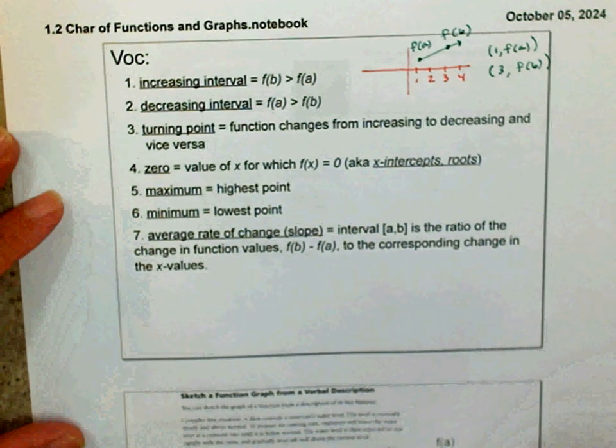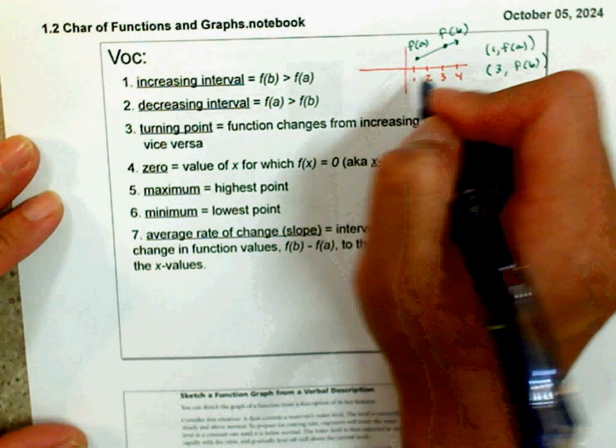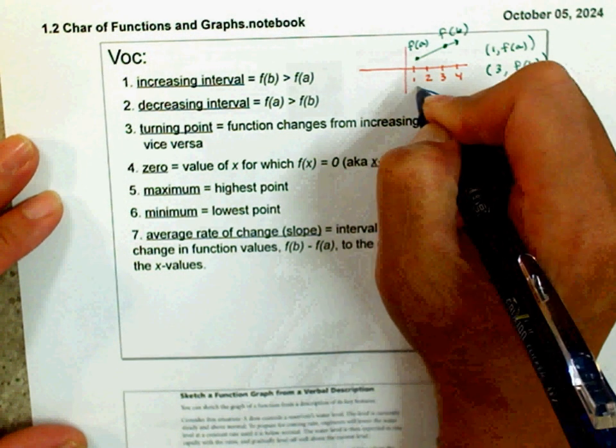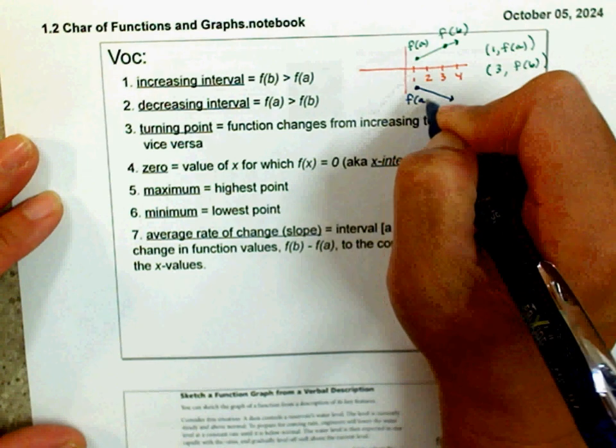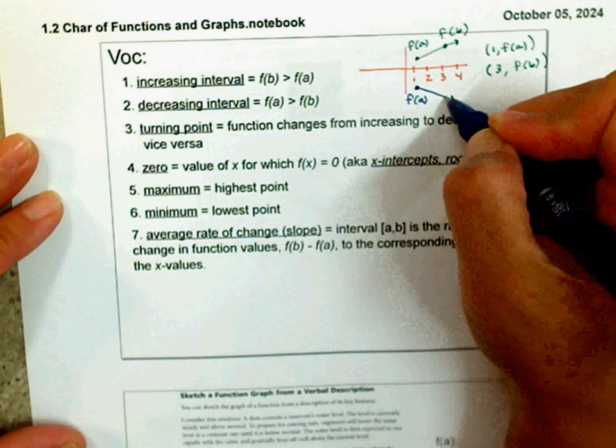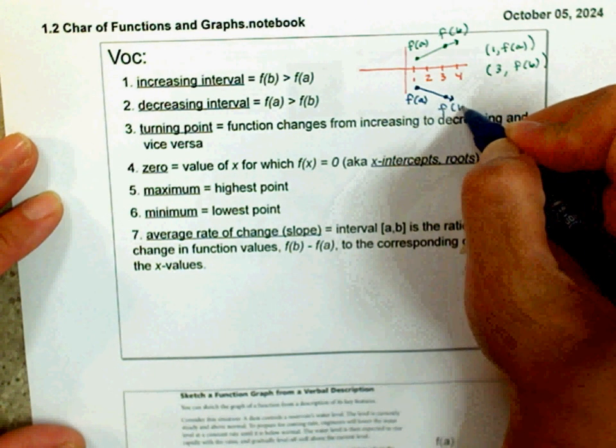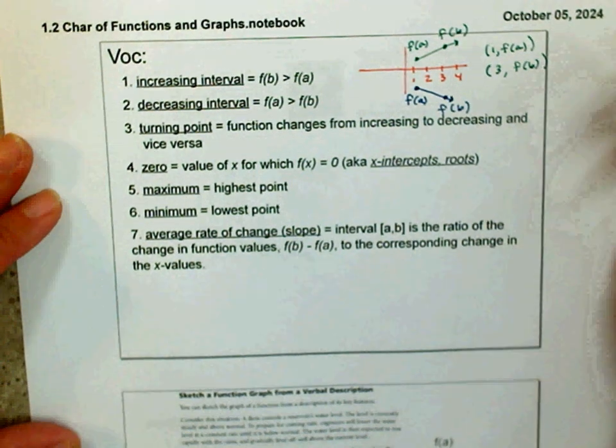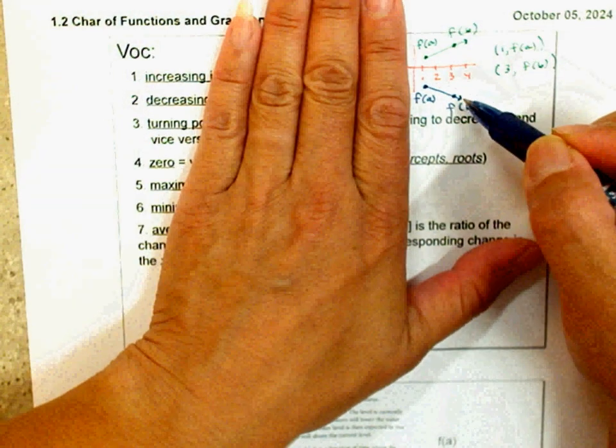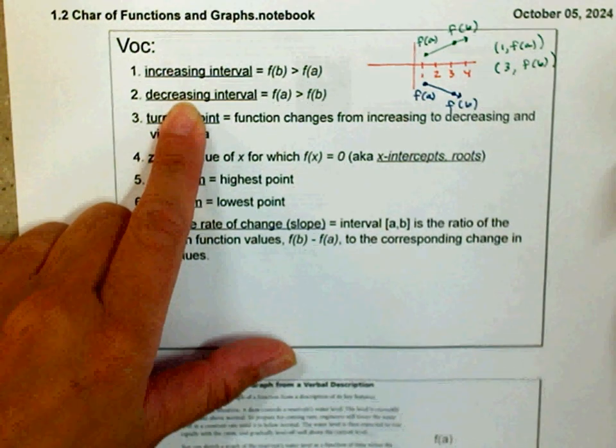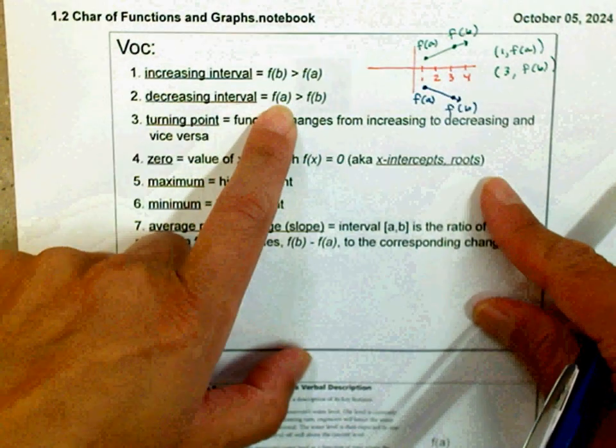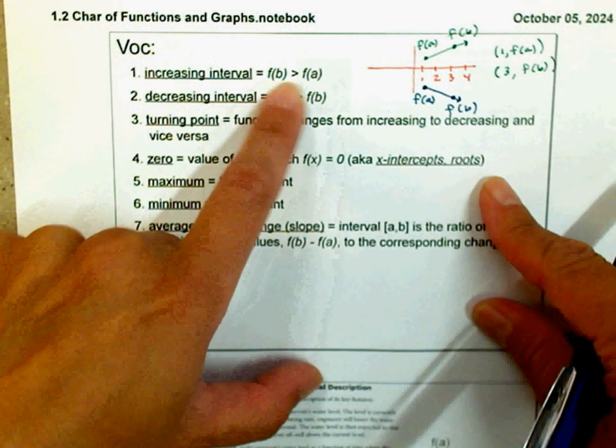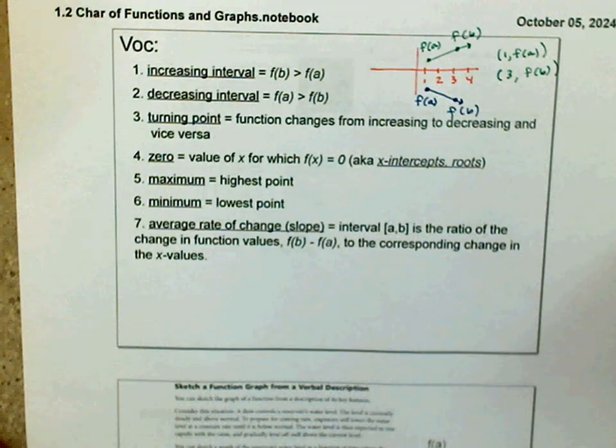Interval decreasing would be something like this. So here is your f(a), which is your y value, is more than this y value, which is f(b). This is a decreasing interval. That is all it's saying. f(a) is bigger than f(b). So you're looking at the y value comparison.